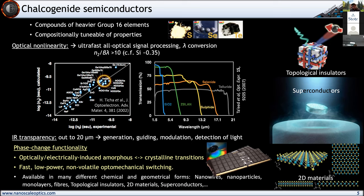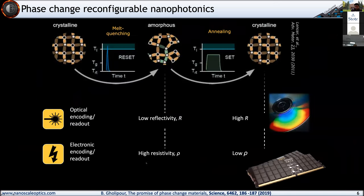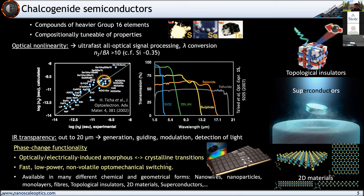Around the late 1960s, Ovshinsky started to push the phase change functionality that these materials have. Chalcogenide semiconductors — a large number of them — have this non-volatile, optically or electrically induced amorphous-to-crystalline transition. This meant they've been used for decades in CDs, DVDs, and Blu-rays — when you store information, you're storing it in the phase of the chalcogenide semiconductor. More recently, IBM, Samsung, and Intel have started integrating these into electronic phase change memory (PC RAM), which is being touted as a replacement for flash memory — it's fast, low power, and non-volatile.